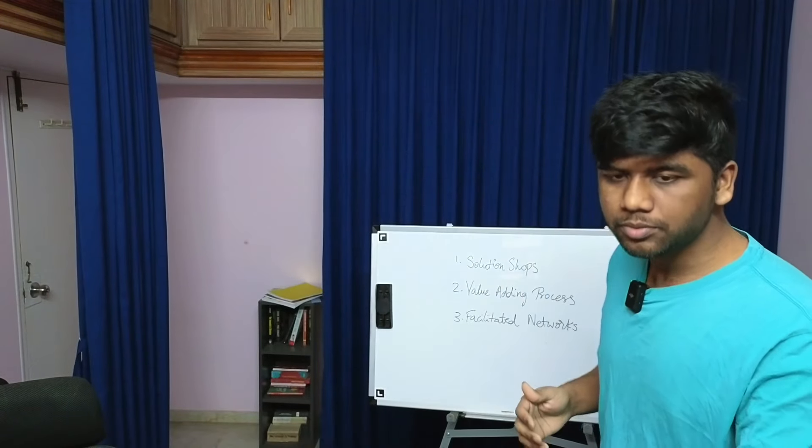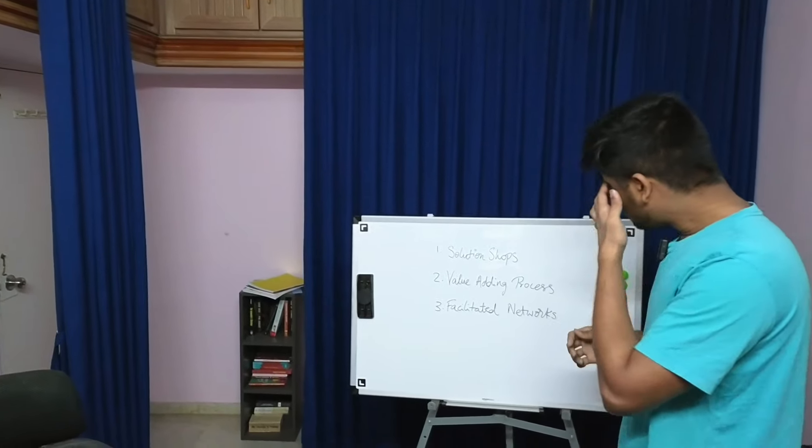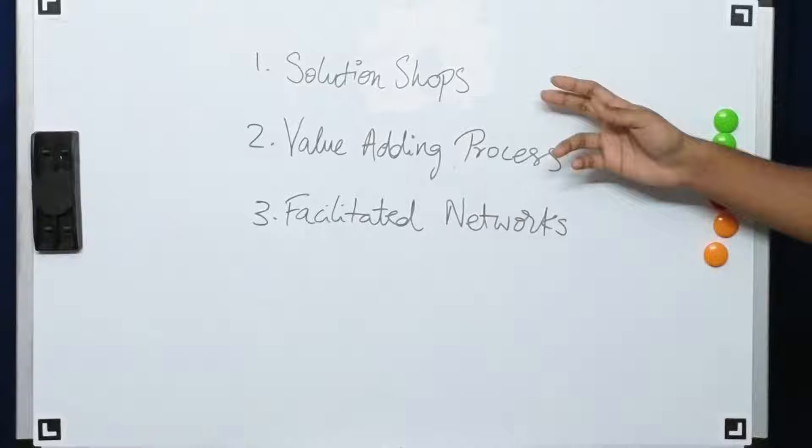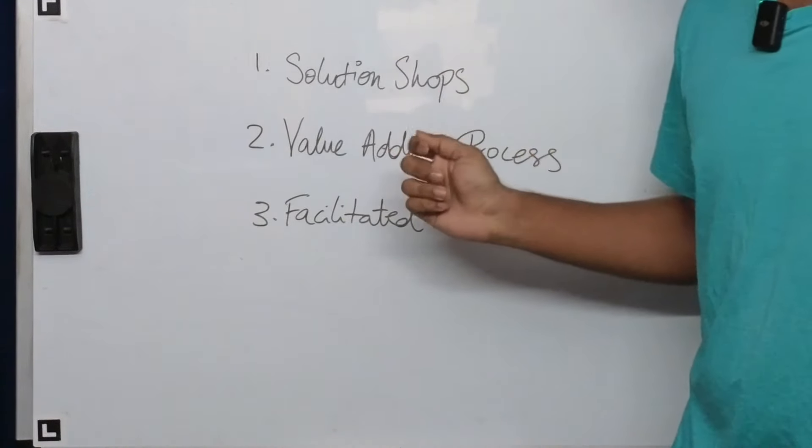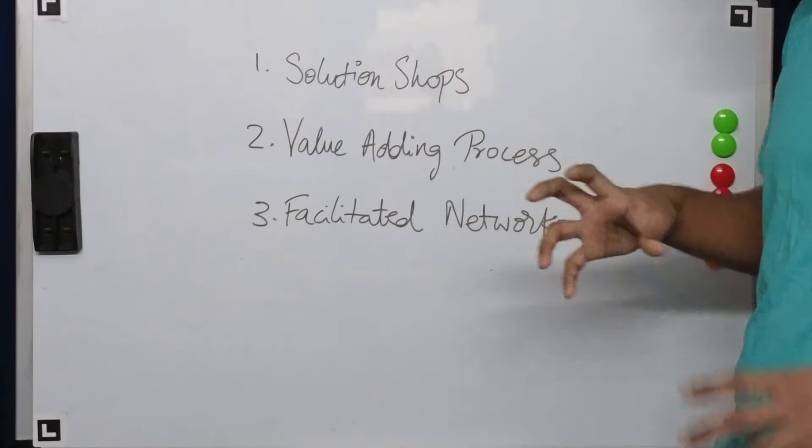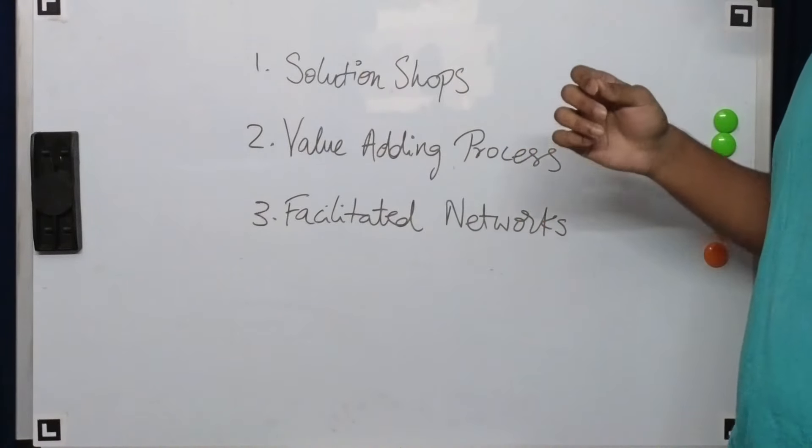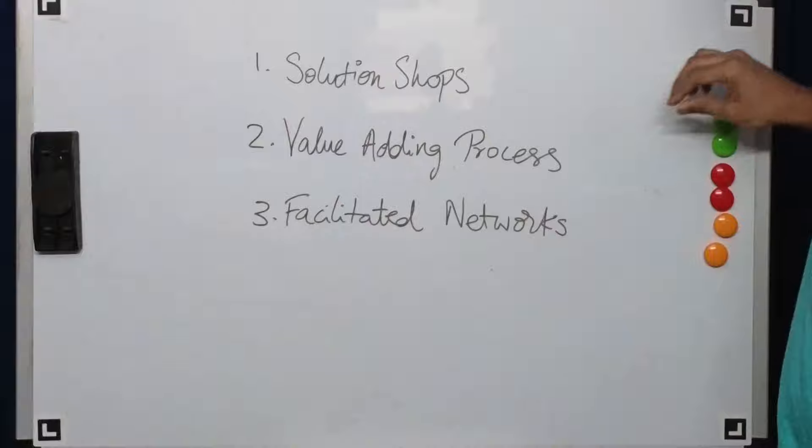But with the changing world, with globalization, that's not the case anymore. So let's look at how Innovators Prescription suggests these business processes should look like. First up, they talk about solution shops. In traditional business, solution shops are places where you go to and they will solve a problem, right?